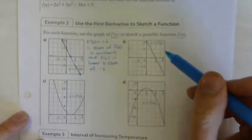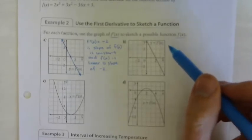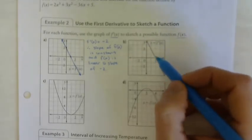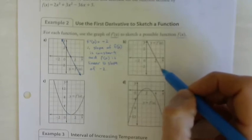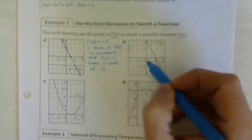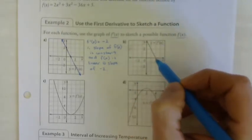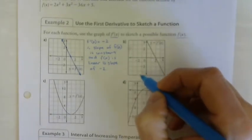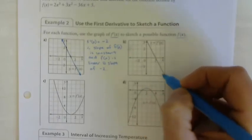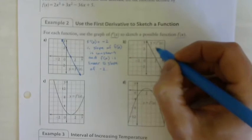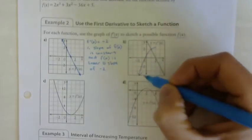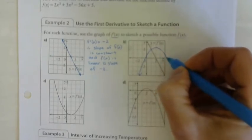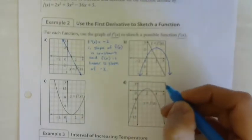For part b, again we're given a graph of a derivative function and need to sketch a possible f of x. The slope is linear, which means our original function is going to be quadratic. The slope to the left of two is positive and decreasing, and to the right of two it is negative and decreasing — which means we have a downward-opening parabola.